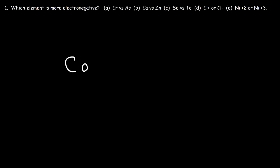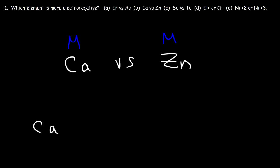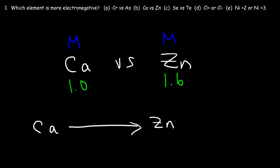Part B: let's compare calcium and zinc. Both are metals, so we look at their positions on the periodic table. Calcium is an alkaline earth metal on the left side, and zinc is a transition metal to the right of calcium. Electronegativity increases as you go right — the value for calcium is about 1.0 and for zinc it's 1.6, so zinc is more electronegative than calcium.